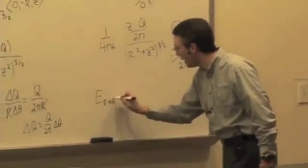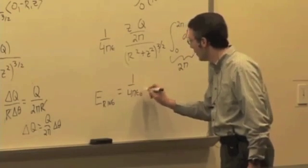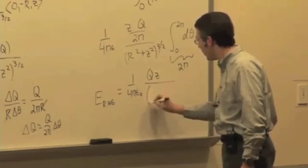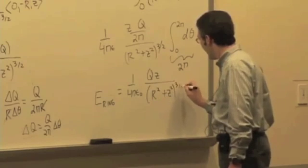and we get, for our result, the electric field of a uniformly charged ring is equal to 1 over 4 pi epsilon 0, q times z over the square root of r squared plus z squared to the 3 halves.